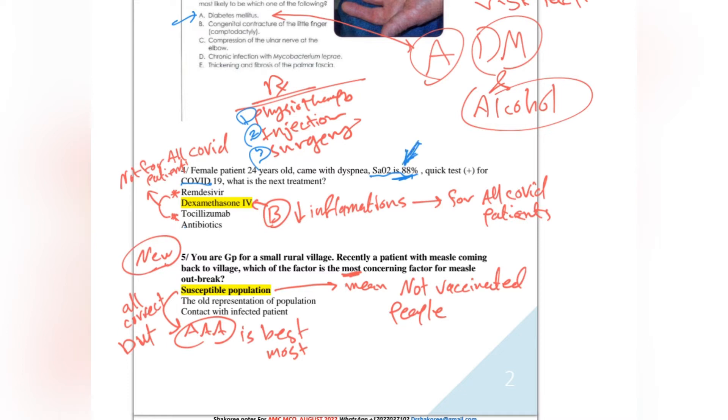For dexamethasone, it can be given for all patients who are in need of oxygen, like our patient here - SpO2 is low, saturation is low, so the patient needs oxygen. But for remdesivir and other antibiotics, this needs specific indication, not for all patients. Always in COVID patient with mild to moderate COVID, remember to give dexamethasone. It will reduce inflammation and is accepted for all COVID patients.